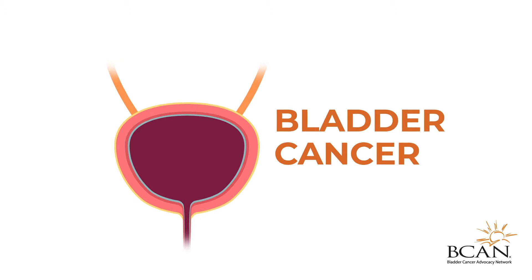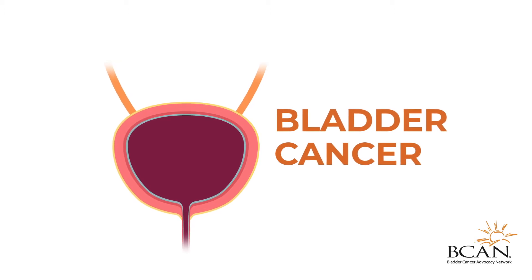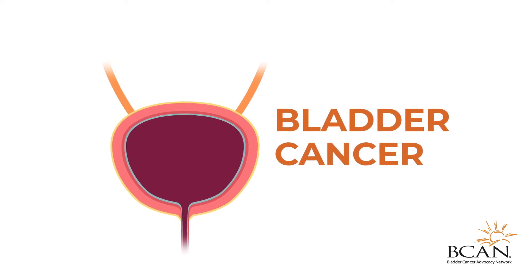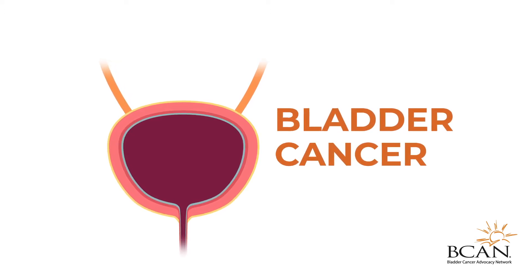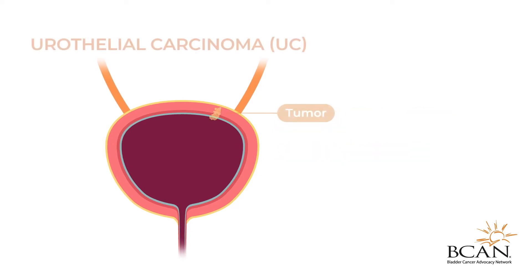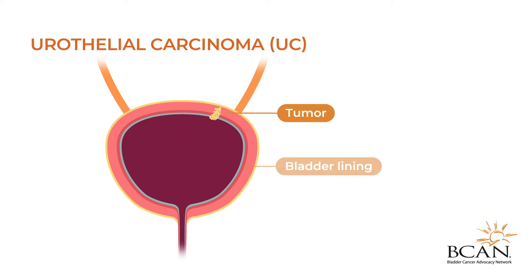Bladder cancer occurs when a growth of abnormal tissue, known as a tumor, forms in the bladder lining. The most common type of bladder cancer is known as urothelial carcinoma. It begins in the urothelial cells of the bladder lining and urinary tract.